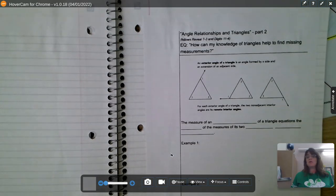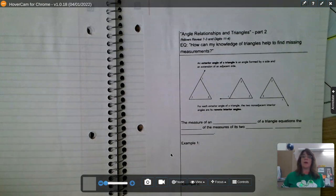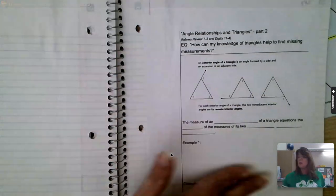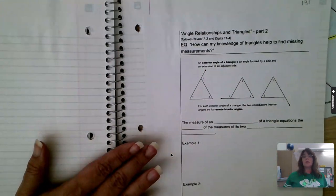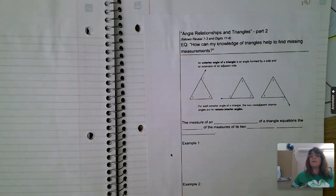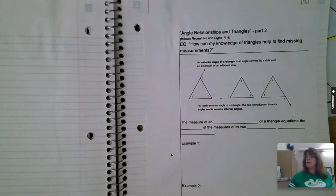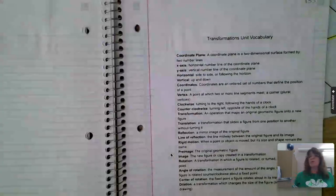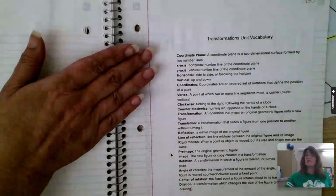I wanted to show you where we're at in our notebooks. We finished angle relationships and triangles. As it's scheduled in our class, today would be the day that you took this quiz, and then you're setting up your next notebook section. So following angle relationships and triangles, we're moving into transformations.